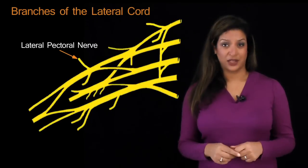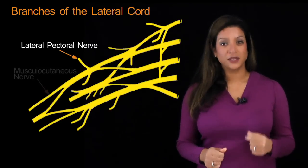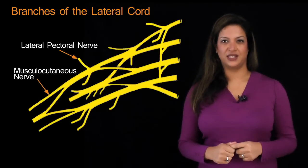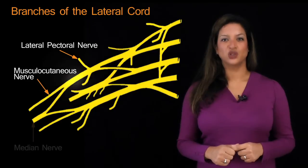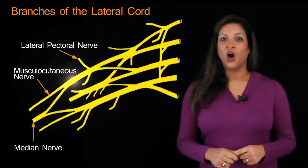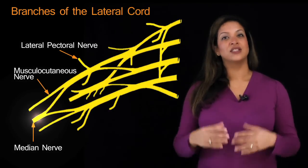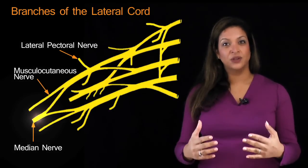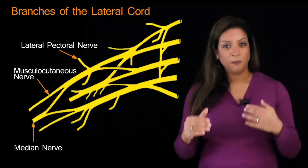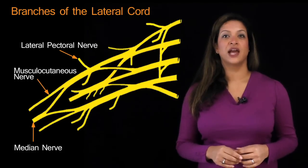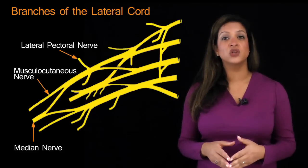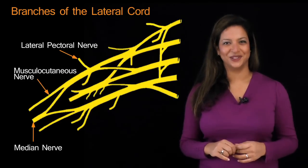The three branches of the lateral cord are: the lateral pectoral nerve, the musculocutaneous nerve, and the contribution from the lateral cord to the median nerve.